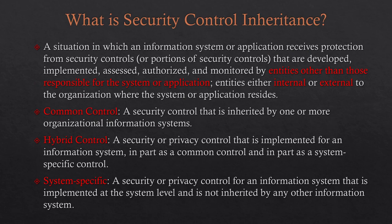Security control inheritance is when you're writing an SSP and describing in your control narratives how you're meeting a particular control — and you start describing other systems as how it's being satisfied. It's being satisfied by something other than your particular system. You can also inherit internally: if you've identified a common control service provider, that could be another system component within your same system, or it could exist outside your organization and become an external service provider.